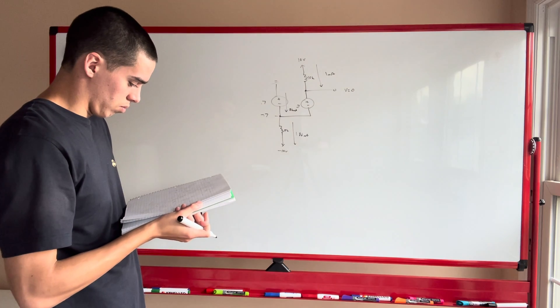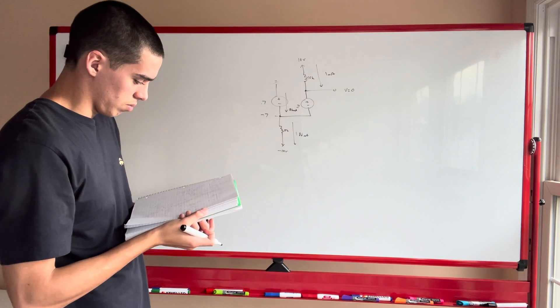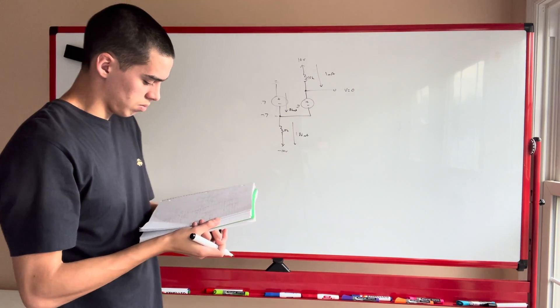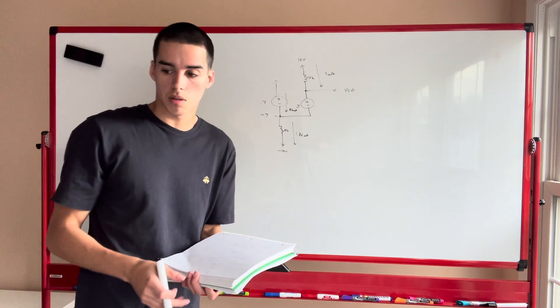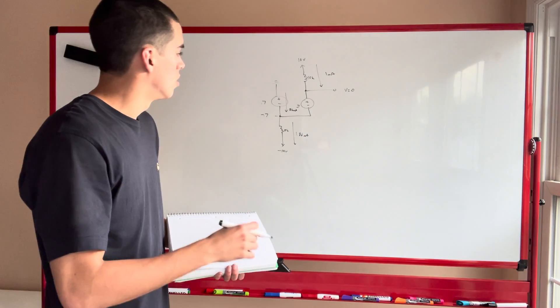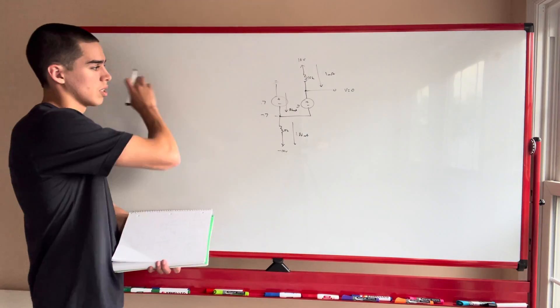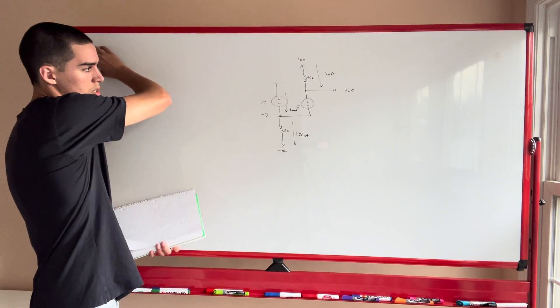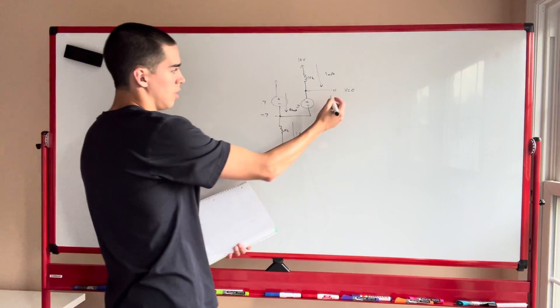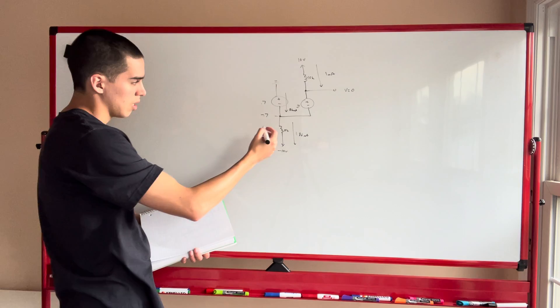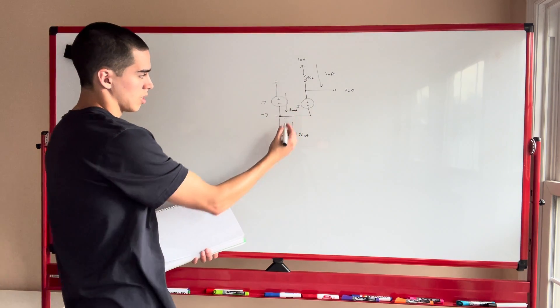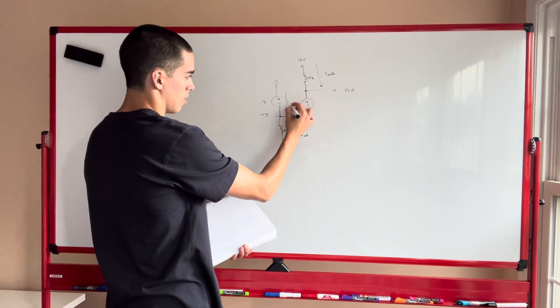So for the first circuit, V₀ is zero volts and I is 0.86 milliamps. That's our answer for the first part.